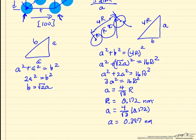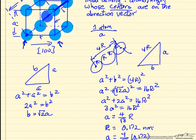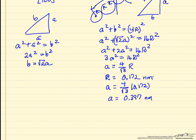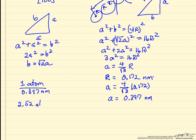So once I have the dimension for a, there's one atom per distance a, which means the linear density is 2.52 atoms per nanometer. So this is the linear density for iron along the [100] direction.